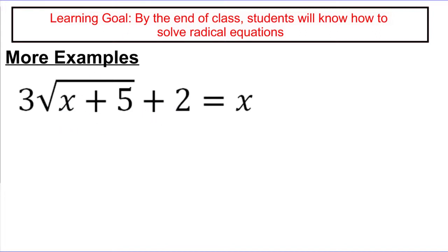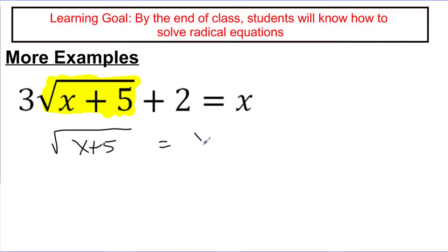I'm trying to isolate my radical — this is the expression I would like to be alone on the left-hand side. So let's get rid of the other things on the left-hand side. We always undo our addition and subtraction first, then multiplication and division. So I'm going to pull all that stuff over to the other side in one big step so that x plus 5 is alone. I first subtract the 2, then divide by 3. I end up with this expression on the left. I can't combine x with 2, and I can't simplify further. So this is as simple as I can get it, and now my radical is alone.